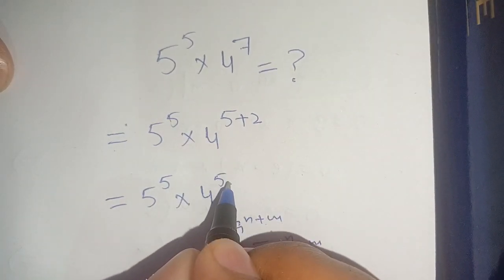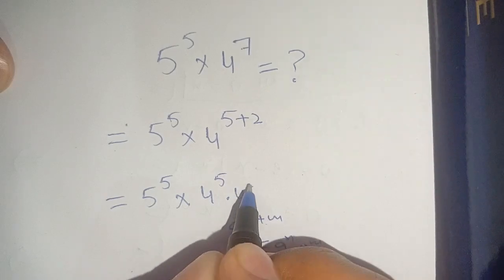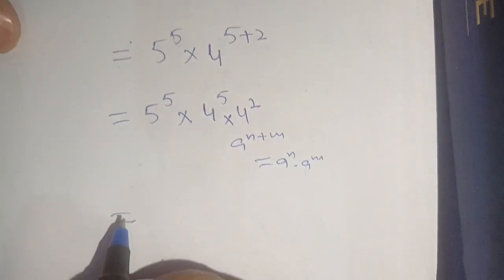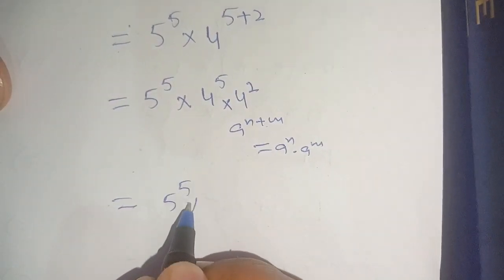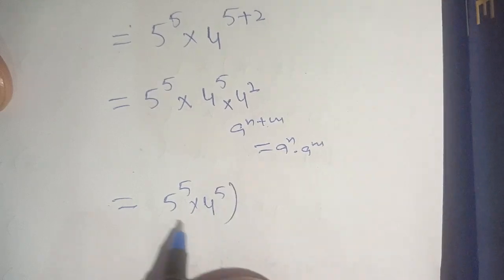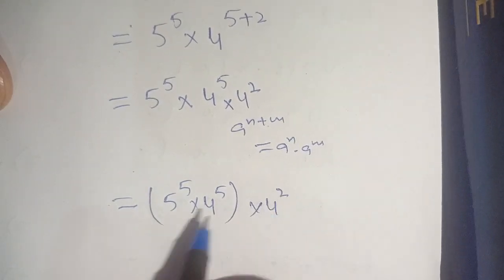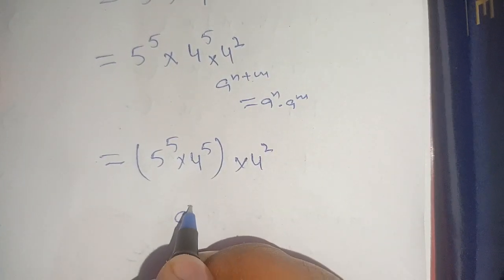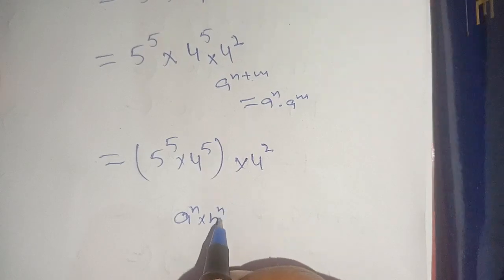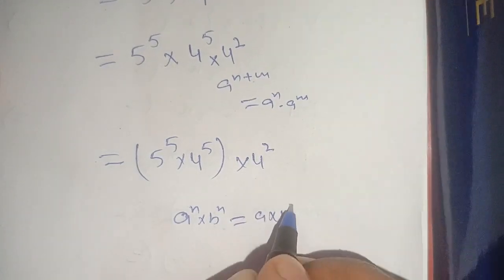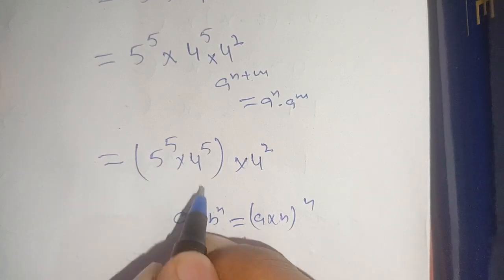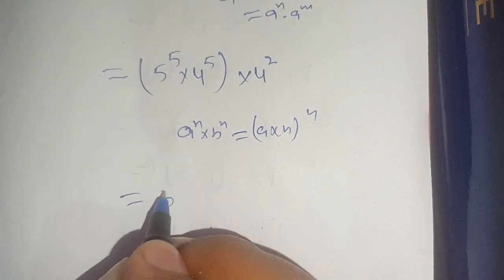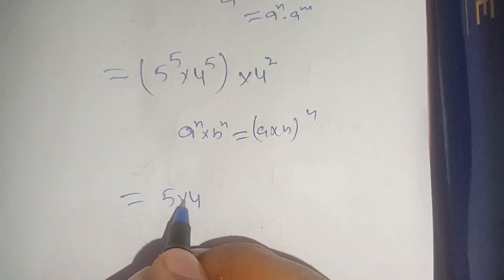Using this identity, we get 4 raised to power 5 times 4 raised to power 2. So we can write it as 5 raised to power 5 times 4 raised to power 5 times 4 raised to power 2. Now, we apply the identity: a raised to power n times b raised to power n equals (a times b) raised to power n, where a is 5, b is 4, and n is 5.